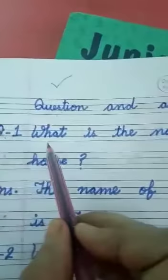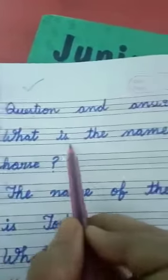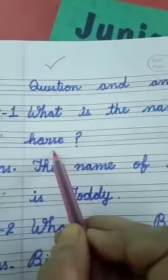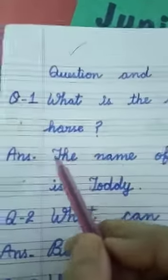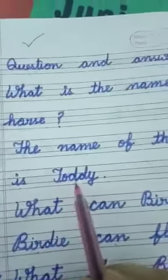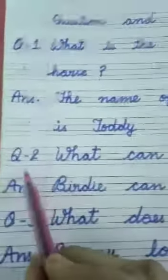Next we will revise question and answer. Question number 1: What is the name of the horse? Answer: The name of the horse is Toadie.